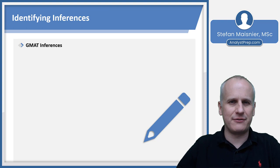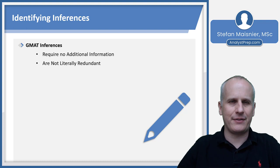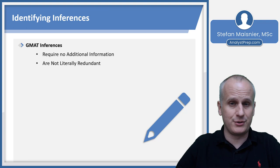Let's talk about how inferences work and how you can identify logical inferences. GMAT inferences should require no additional information — they are true based solely on the information presented; you don't need any outside knowledge. GMAT inferences are also not literally redundant, so you're not going to see 'Bill was at the store' and then the correct answer is 'Bill was at the store.' But you could see something like: Bill was at the store, so you can infer that Bill was not at his house, because Bill is at the store and the store is not his house.